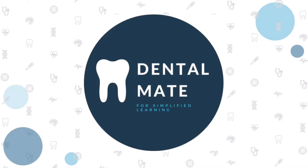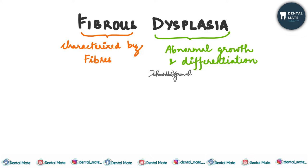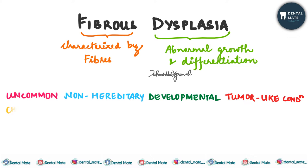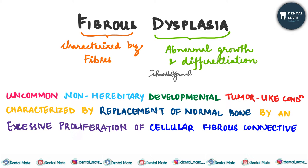Fibrous dysplasia is a disease of bone. It is called fibrous dysplasia because it is characterized by fibers, and dysplasia means abnormal growth and differentiation. It is an uncommon, non-hereditary, developmental, tumor-like condition, which is characterized by replacement of normal bone.